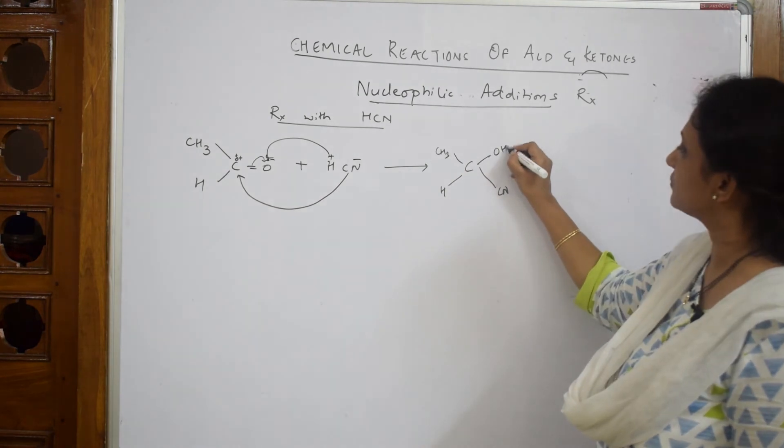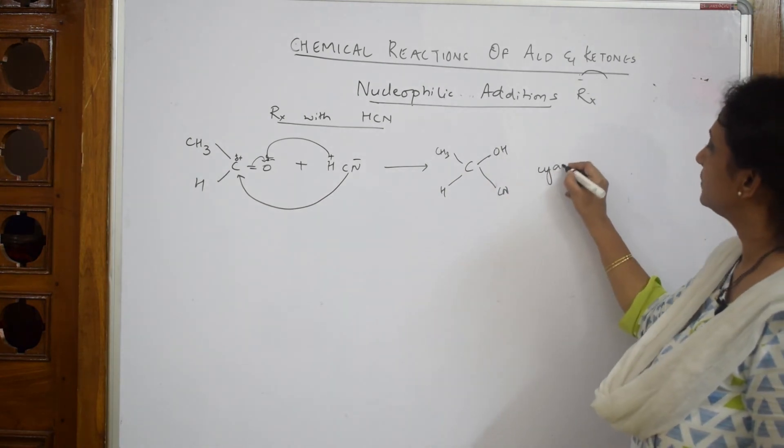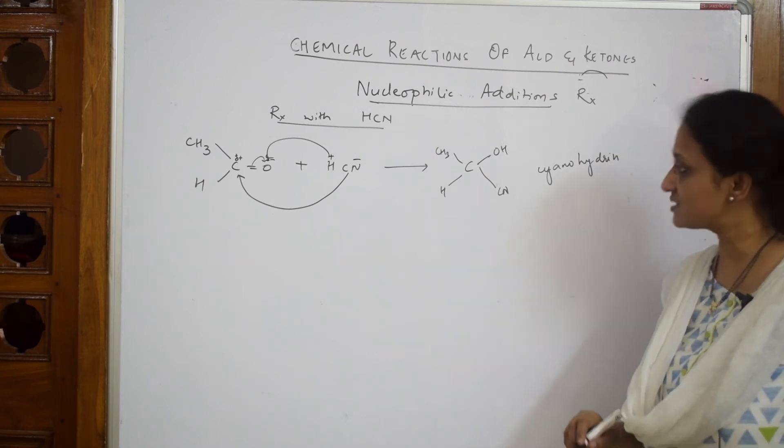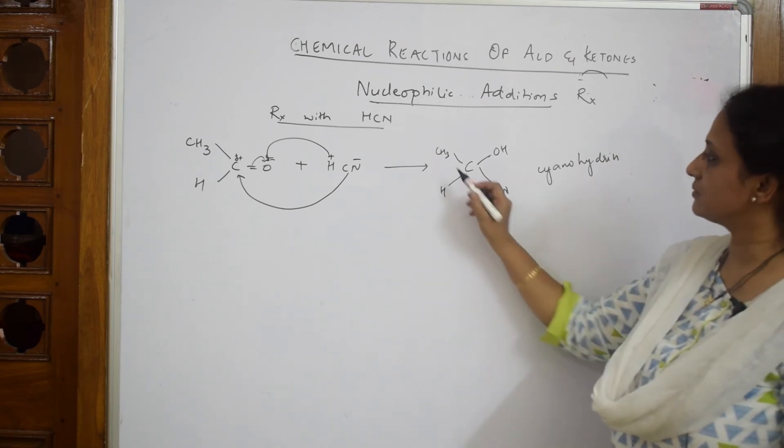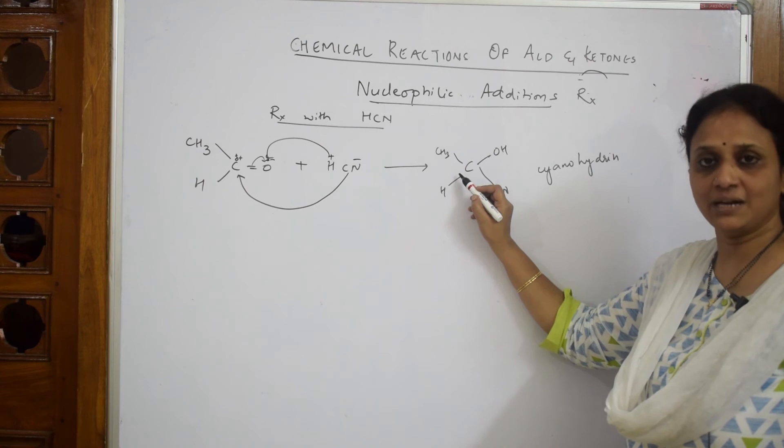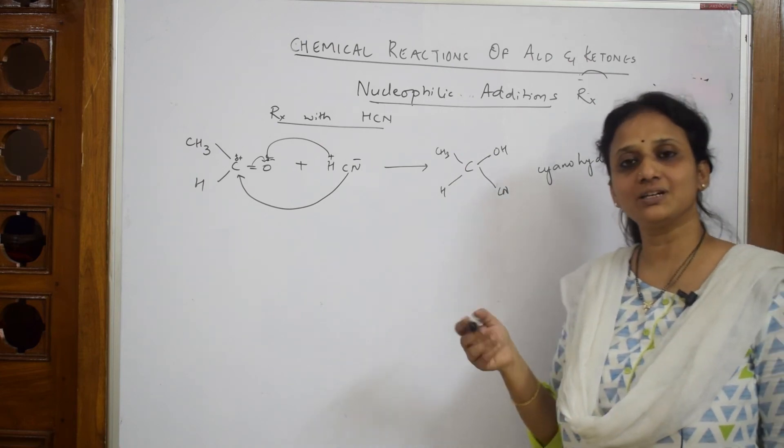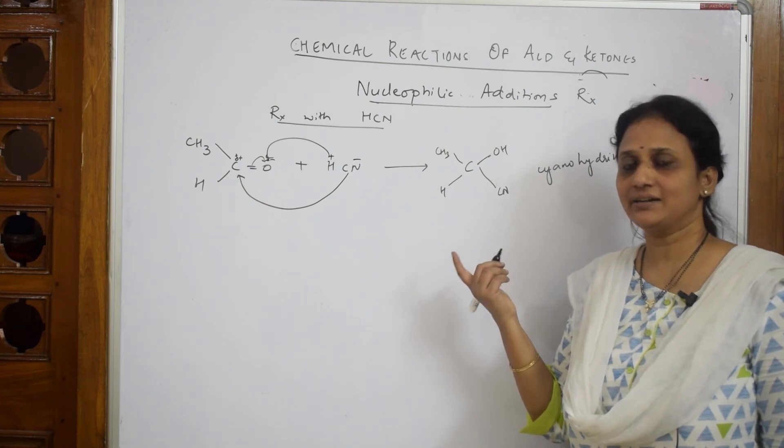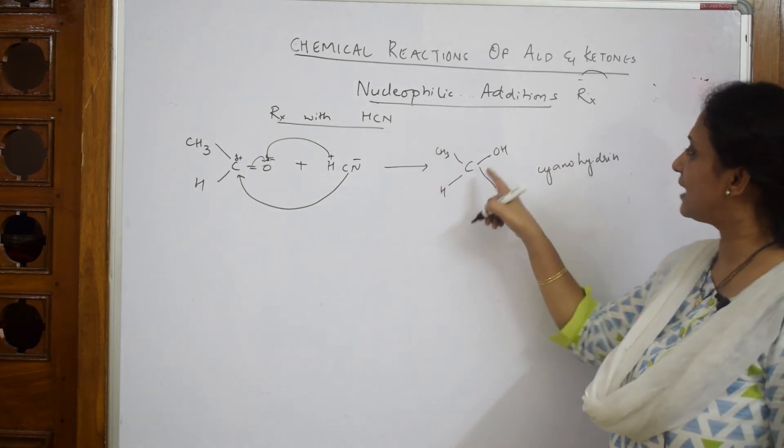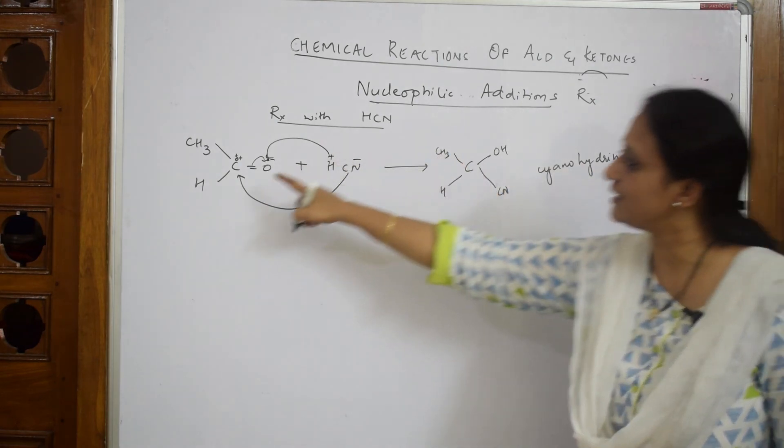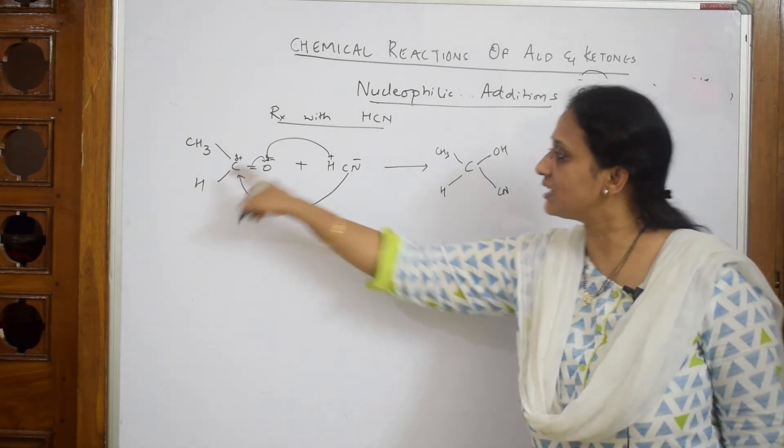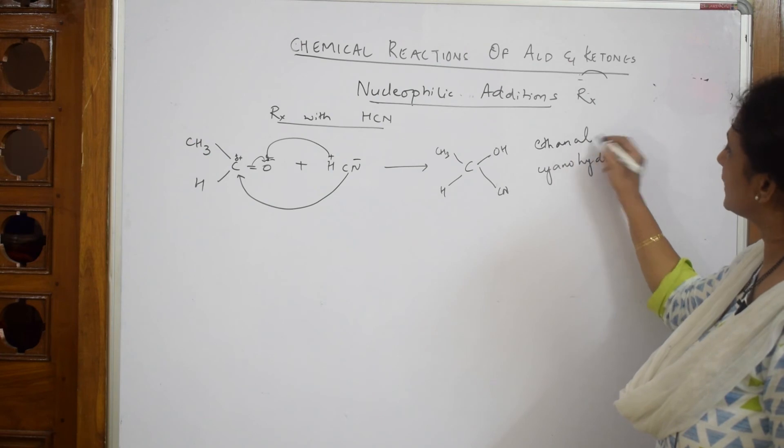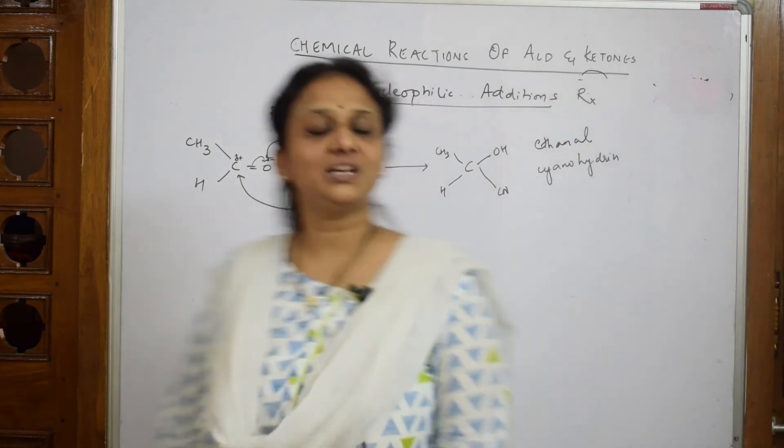This is called a cyanohydrin. Which cyanohydrin is this? This is two carbons from ethanal or acetaldehyde. We call it ethanol cyanohydrin or ethanal cyanohydrin.